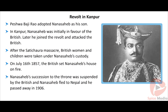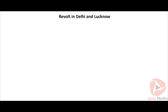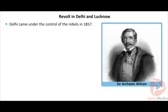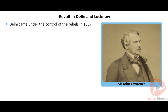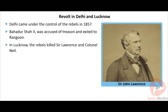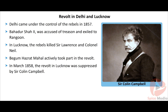British women and children were taken into Nana Sahib's custody and later killed in the Bibigar massacre. British forces reached Kanpur on July 16, 1857 and set Nana Sahib's house on fire. Nana Sahib had been proclaimed as Peshwa but his succession was suspended by the British. He fled to Nepal and passed away in the year 1906.